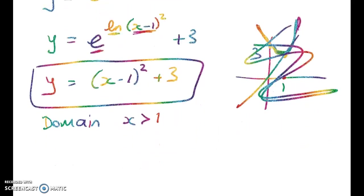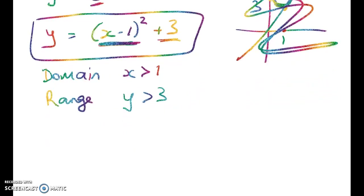So the domain is x greater than 1, and I can see very easily from that what's the range going to be? Well, this is always going to be strictly positive no matter what x we put in, plus 3. So the range is going to be y is greater than 3.